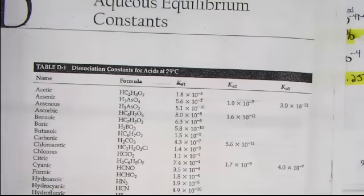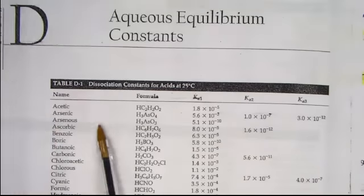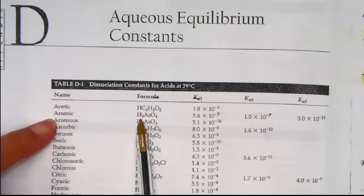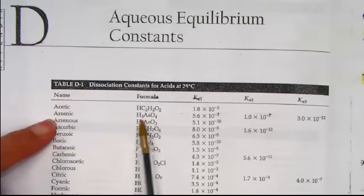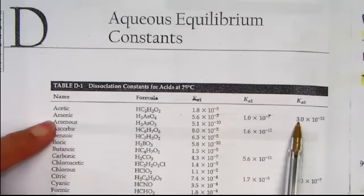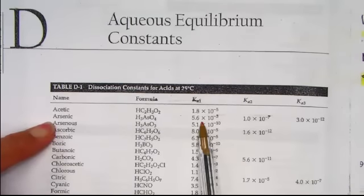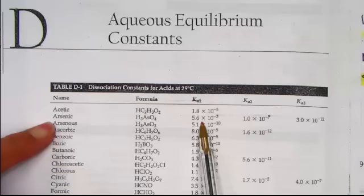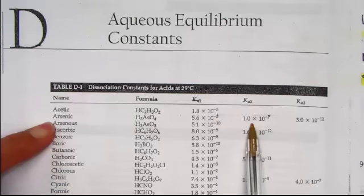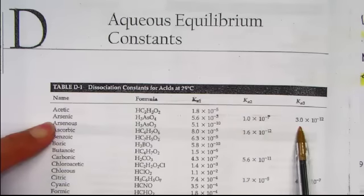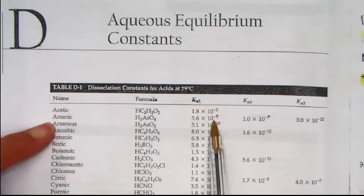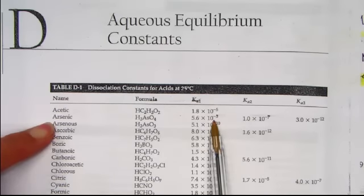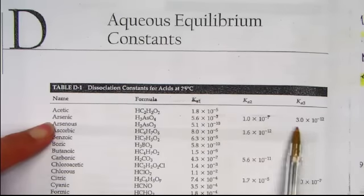If we look at an example of a Ka, here's arsenic acid. It's a triprotic acid. It has three values of Ka. Removal of the first proton, 5.6 times 10 to the negative third. To remove the second proton, 1 times 10 to the negative 7. And finally to remove the third proton, 3 times 10 to the negative 12. Notice the magnitude of the Ka constants gets significantly smaller.